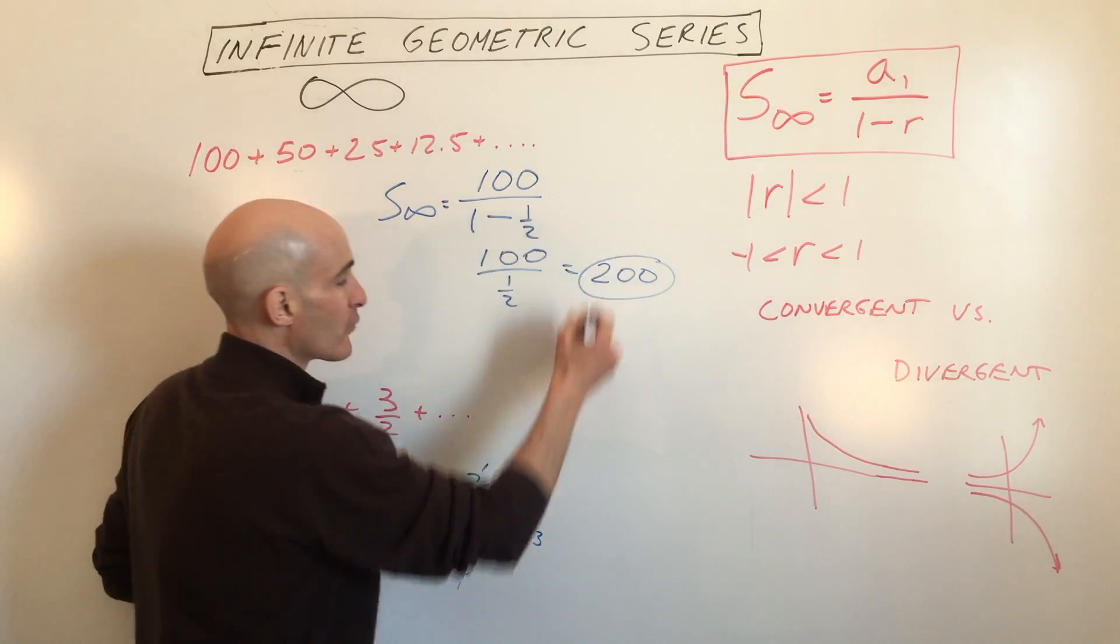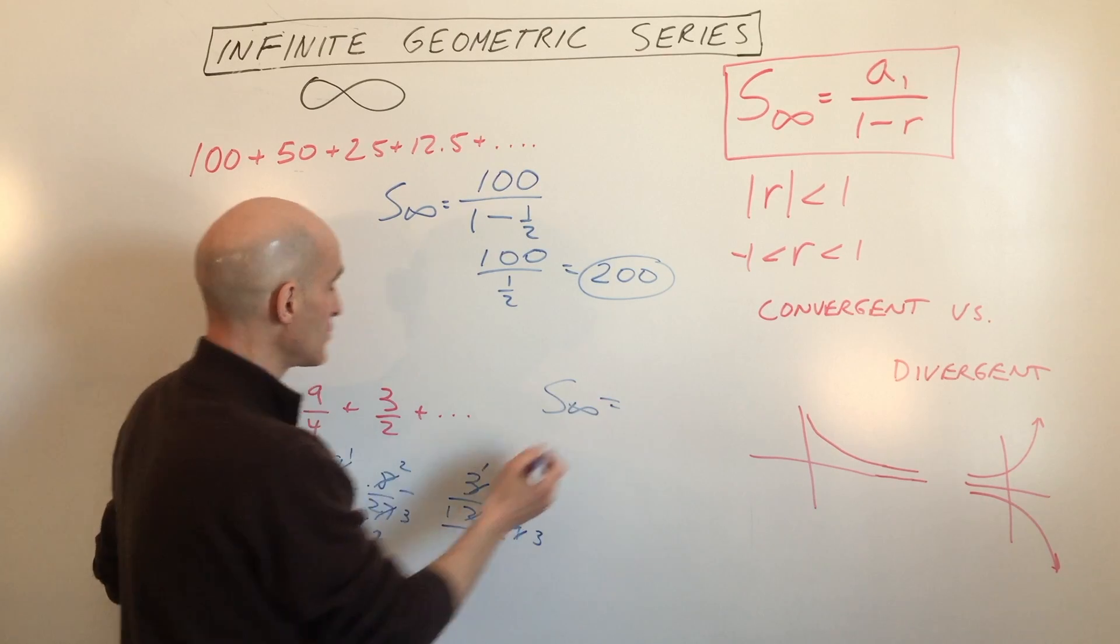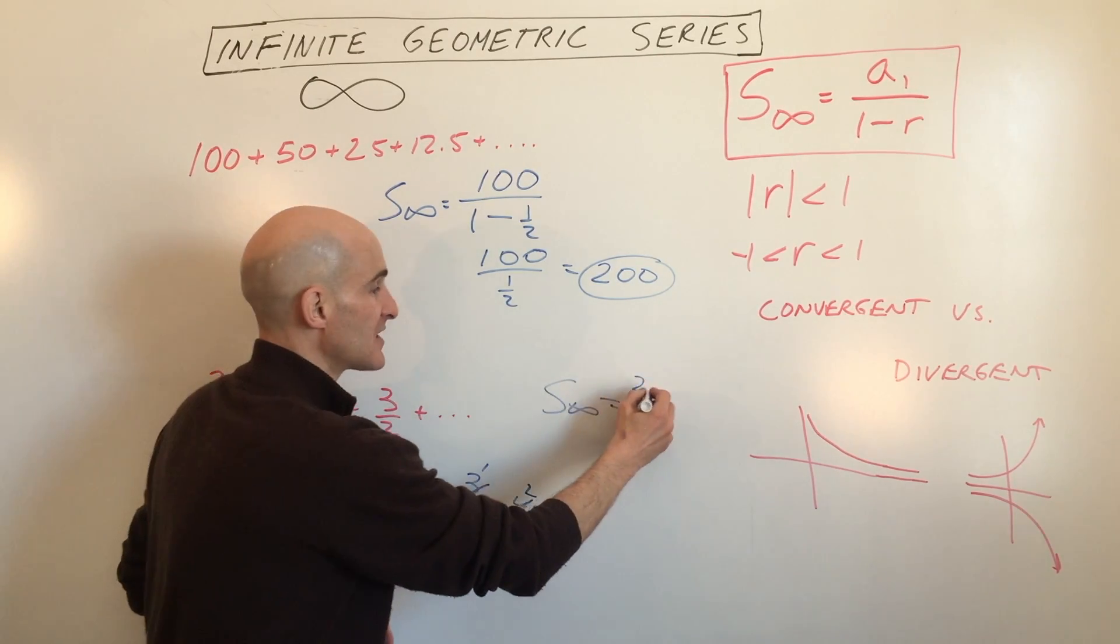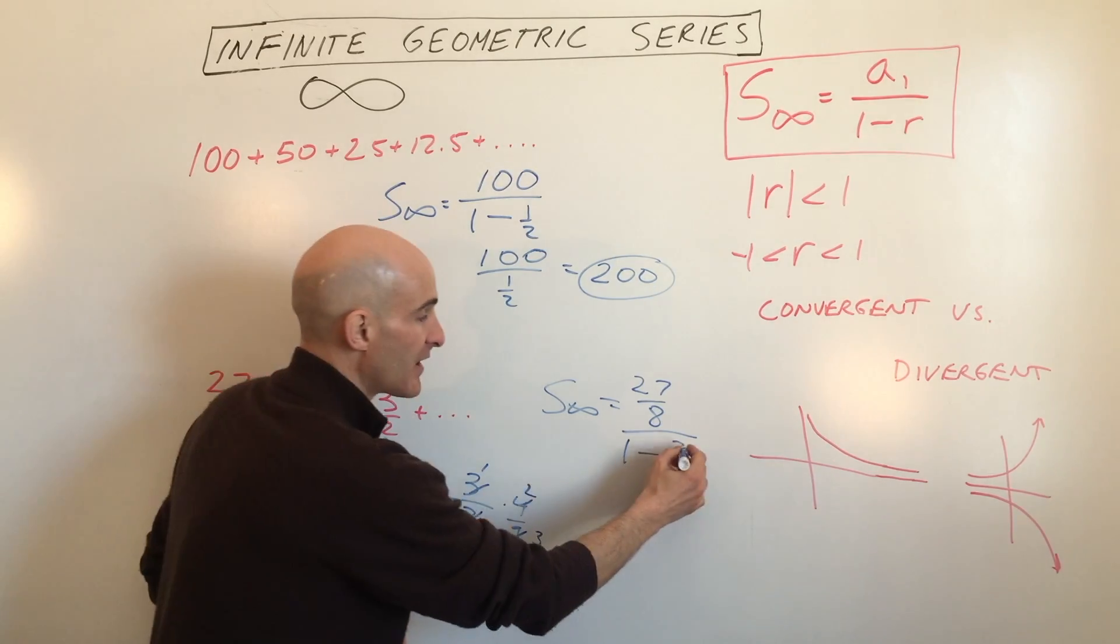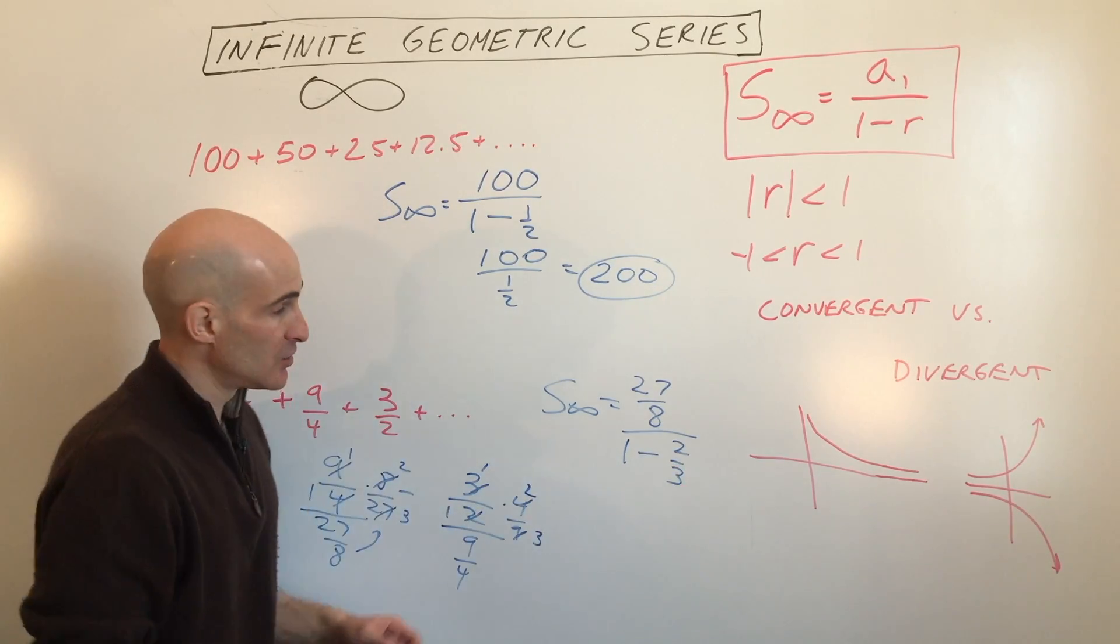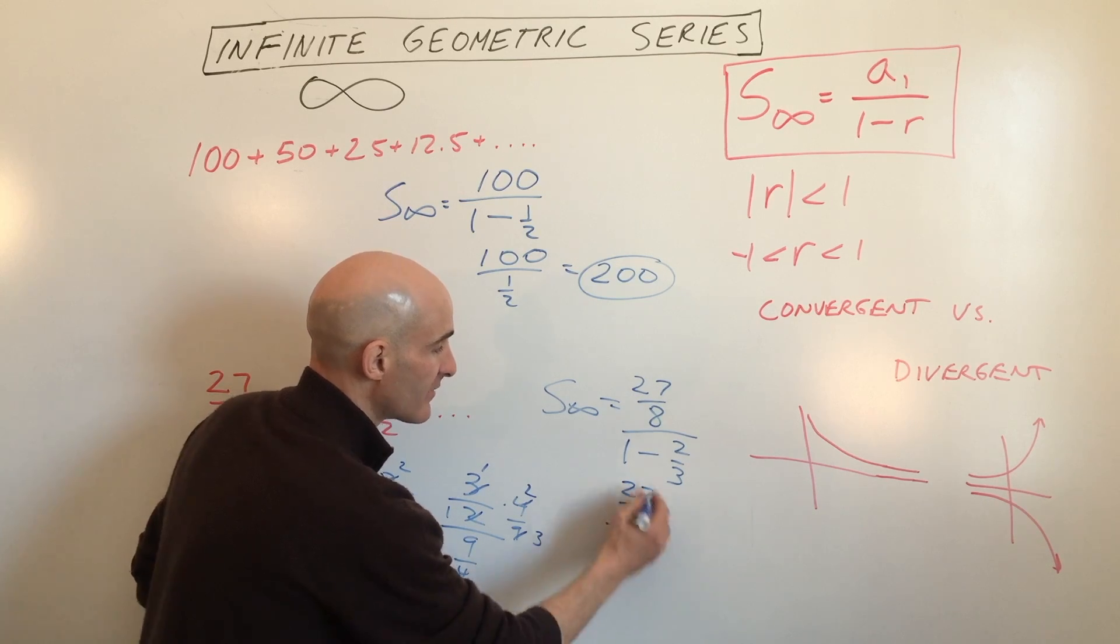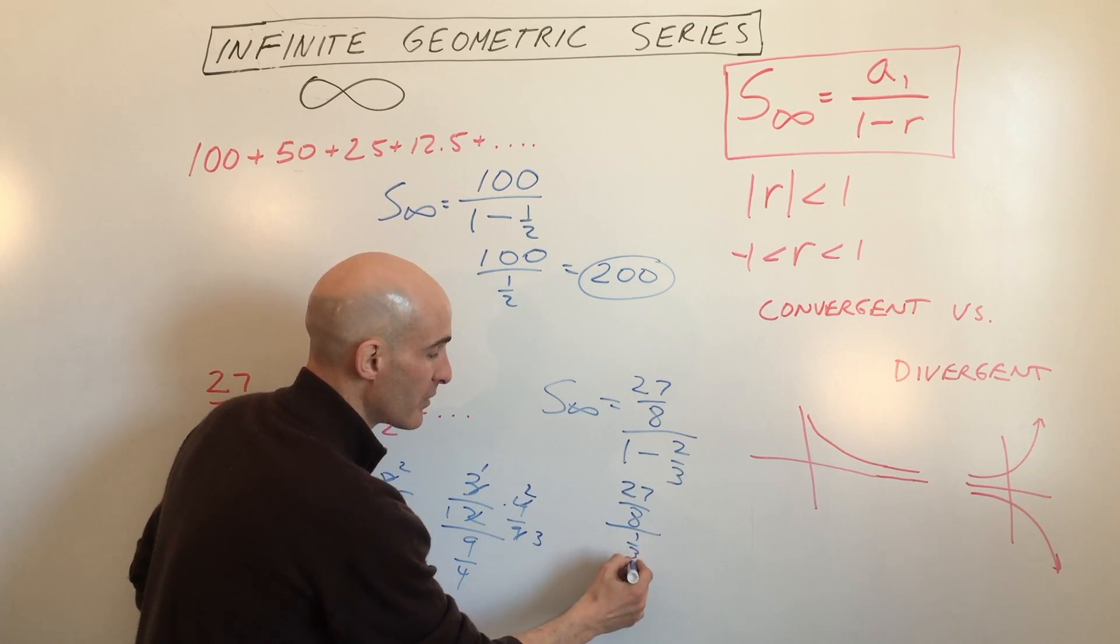So let's go ahead and use our formula, the sum of an infinite geometric series. It's the first term, which is 27 eighths divided by 1 minus the ratio, which we found out was 2 thirds. Do a little bit of arithmetic here. We've got 27 eighths divided by 1 minus 2 thirds is 1 third.